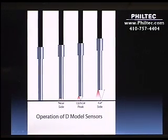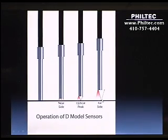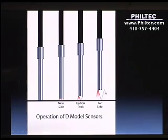As the gap increases beyond that distance, we're now into the far side where the inverse square law is essentially taking over and the light output is decaying with increasing distance.